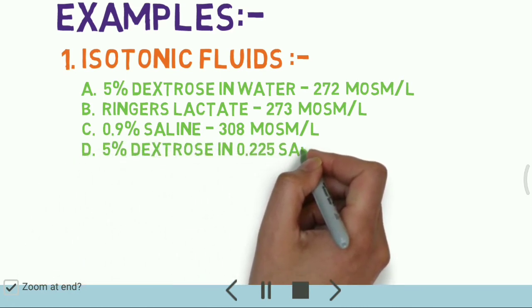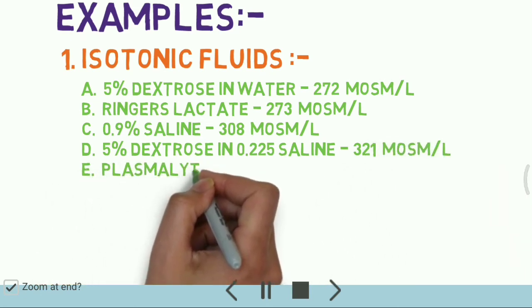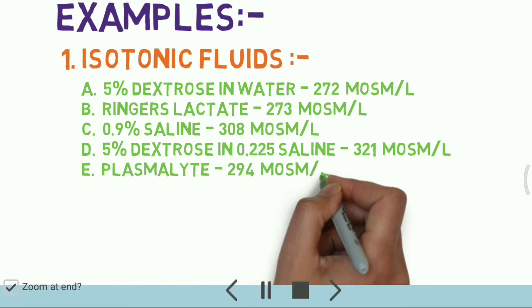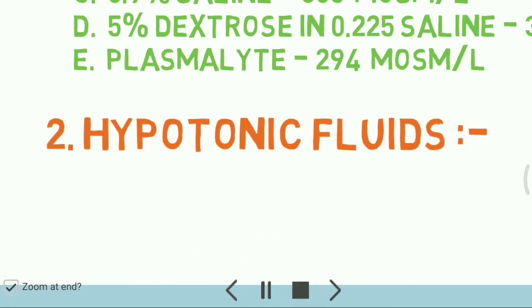5% dextrose in 0.225% saline: 321 milliosmoles per liter. And for plasma lyte: 294 milliosmoles per liter.